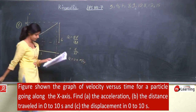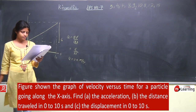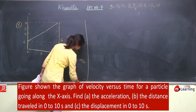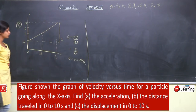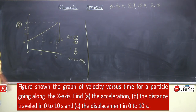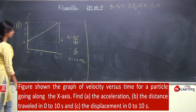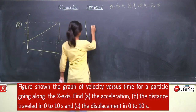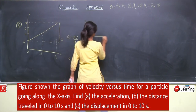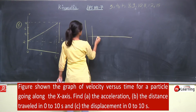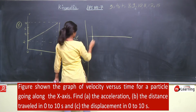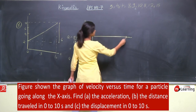Then the distance travelled in 0 to 10 seconds and the displacement in 0 to 10 seconds. इसका acceleration 0.6 meter per second square है। 2 meter per second की initial velocity से x-axis में move कर रहा है। Suppose इसने x equal to 0 से start किया।